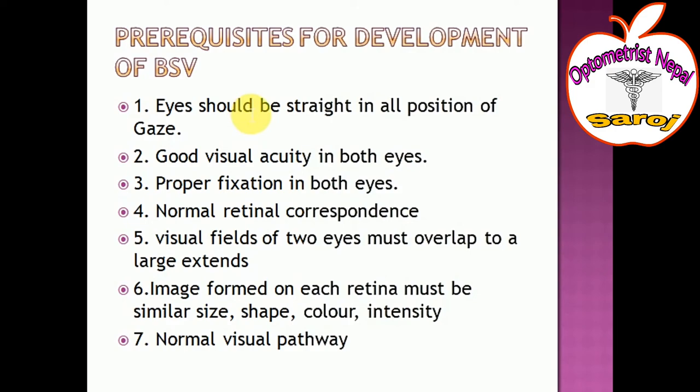The second prerequisite is good visual acuity in both eyes. The right eye must have 6/6 vision and the left eye must also have 6/6 vision. There must be equal visual acuity in both eyes, and under that condition, binocular single vision is a prerequisite.